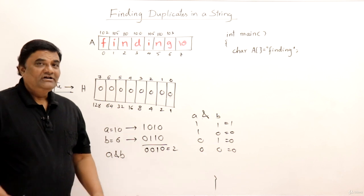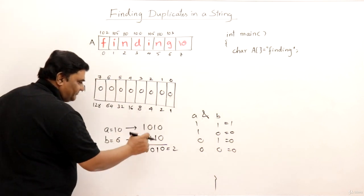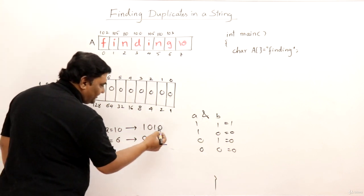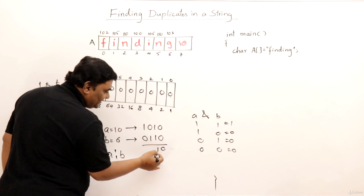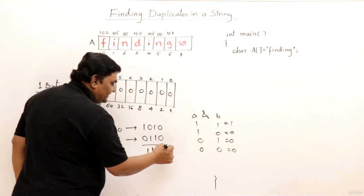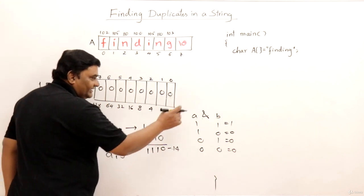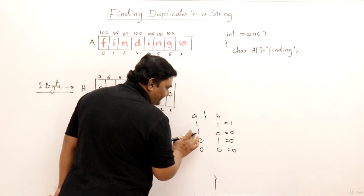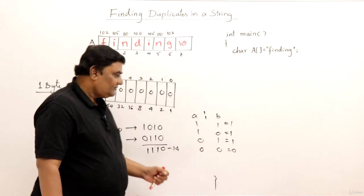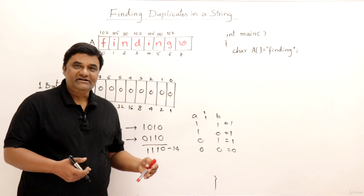Next let us see OR operation using the same numbers. OR means: 0 OR 0 is 0, 1 OR 1 is 1, 0 OR 1 is 1, 1 OR 0 is 1. If any one of the bits is 1 then the result is 1. Performing OR on 1010 and 0110 gives 1110, which is 14 in decimal. So 10 OR 6 is 14.